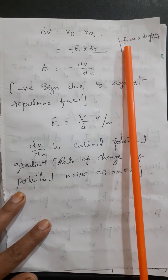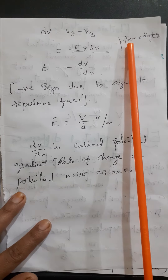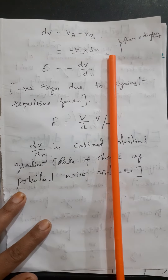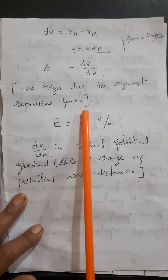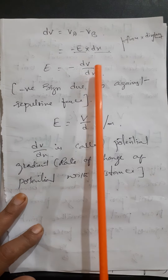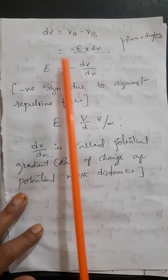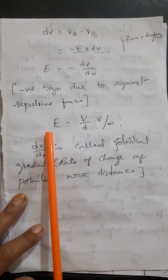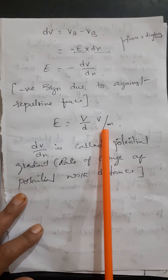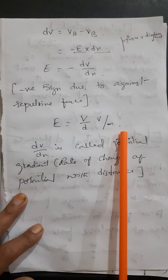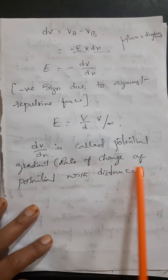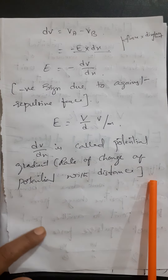Here, the amount of work done is nothing but force into displacement. So the force is E into dx, and the negative sign is for against the repulsive forces. So that can be written as E equals dV by dx. Here E equals V by D. This can be measured in volts per meter, and dV by dx is called the potential gradient, that is the rate of change of potential with distance.